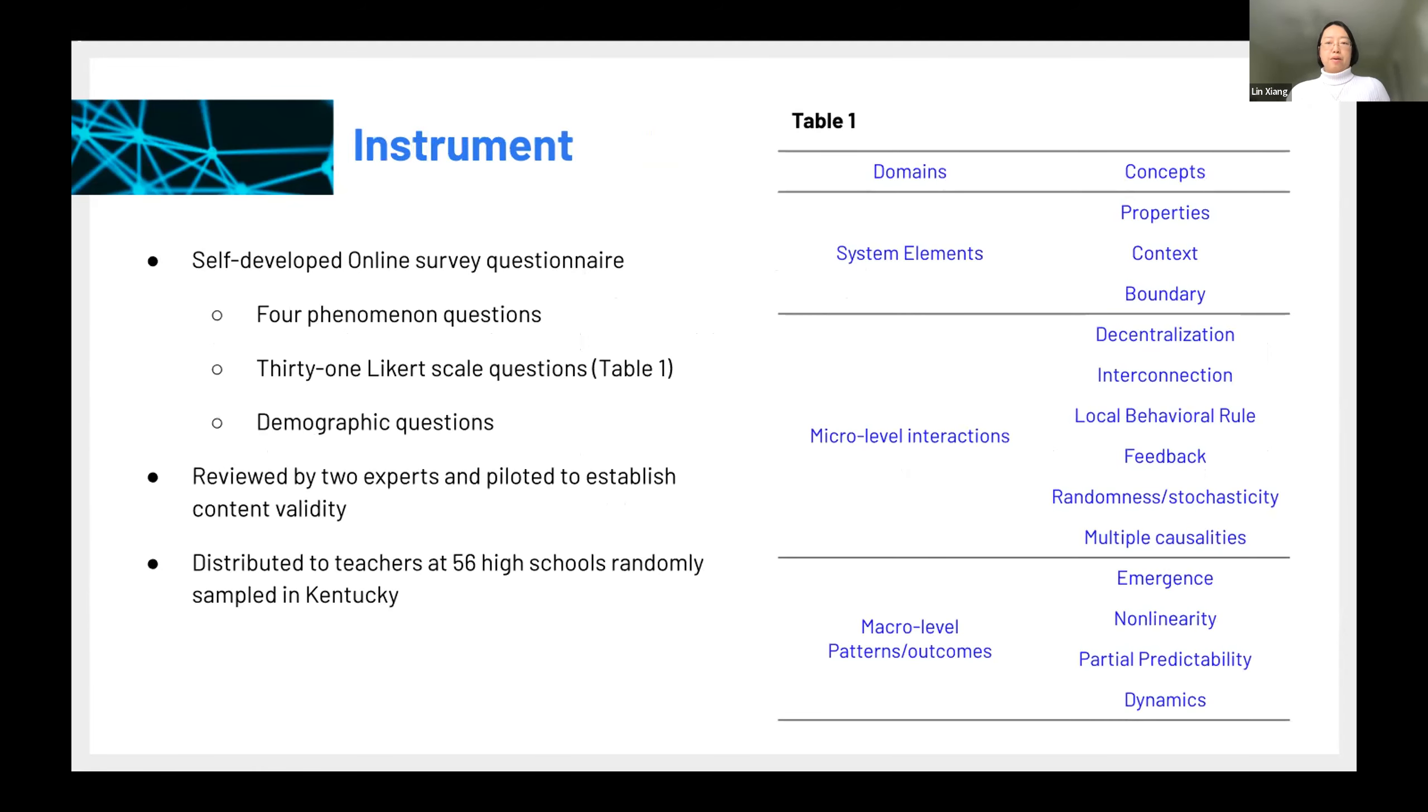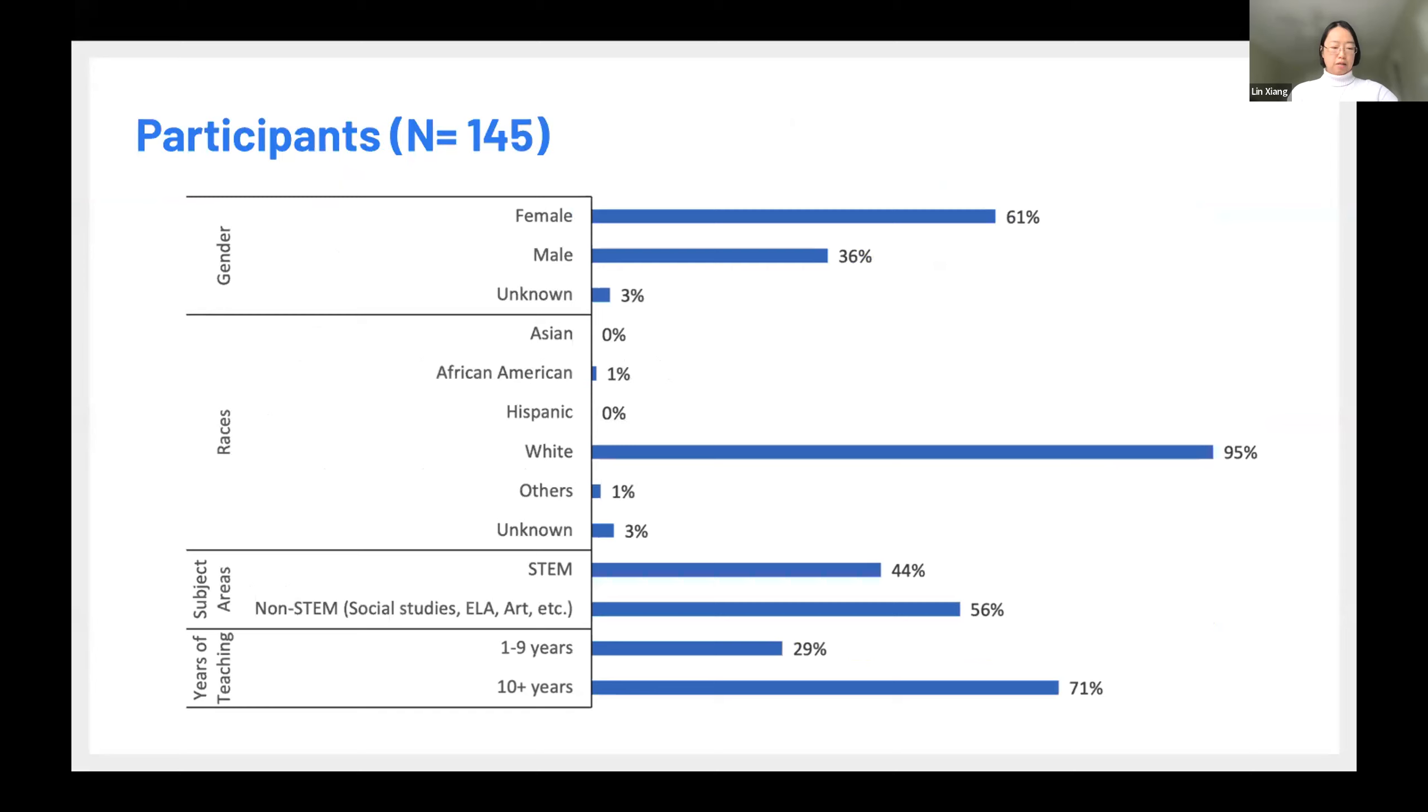So we developed this survey based on the complexity perspective. You can see there are three domains and they also involve the 13 concepts here. So we have different questions in the survey. The big part is the 31 Likert scale questions. We also have four phenomena questions. We wondered how teachers perceived the phenomena. These questions were reviewed by experts and pilot tested. And then we distributed them to teachers at 56 high schools randomly sampled in Kentucky. So eventually we got 145 teachers complete responses. We have to admit that the response is relatively low as this was during the pandemic. But we're still pleased to get back. So majority of teachers are white, that's aligned with the population in Kentucky. Most of the teachers have taught more than 10 years. And we have roughly similar STEM and non-STEM teachers here. We have more female teachers responded.